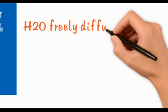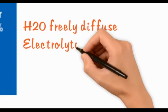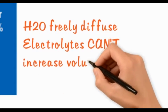Fun fact: water can freely diffuse across all three compartments, but electrolytes cannot. Therefore, either an increase or decrease of volume in any one compartment will either increase or decrease total body water.